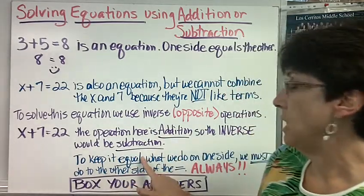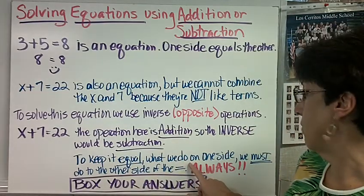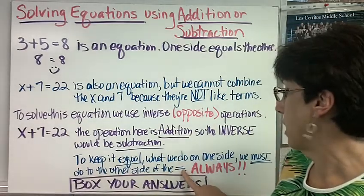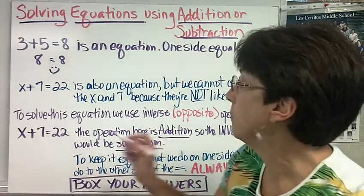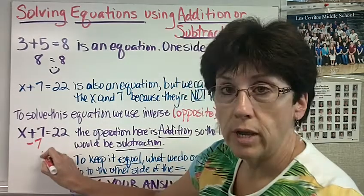And to keep it equal, since it's an equation, whatever we do on one side of the equal sign, what we must also do on the other side of the equal sign, always. So it's addition. The opposite is subtraction.